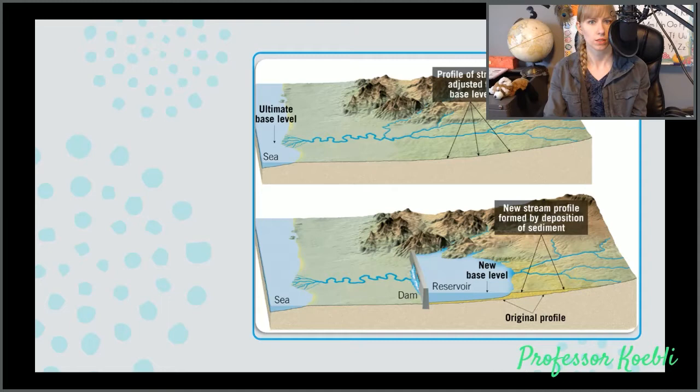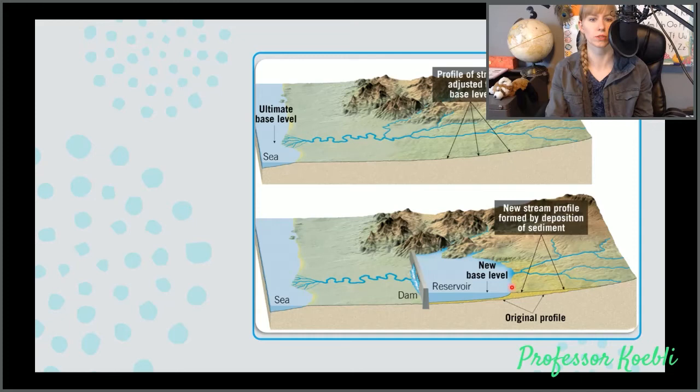Here's another example where we have a profile of a stream. Ultimate base level is going to be sea level. We can see the profile of a stream and then we add a dam and we have a reservoir. Now there is a new base level that forms here instead of the original base level, which was sea level. This will change how the stream will erode.